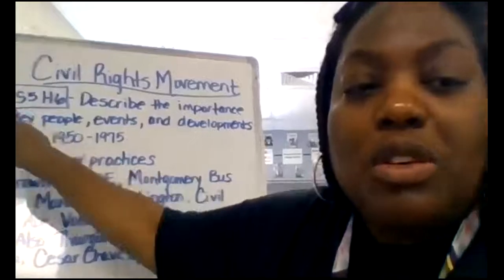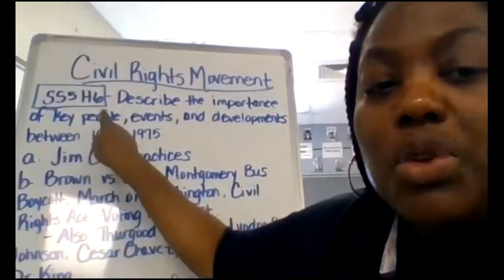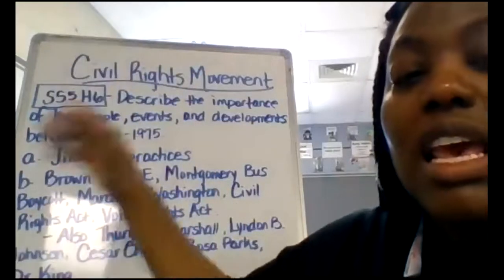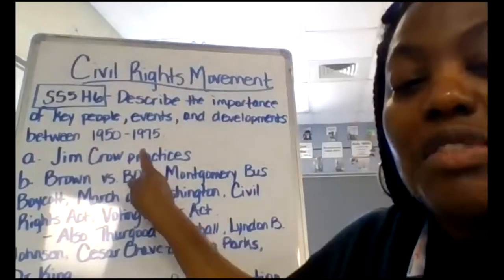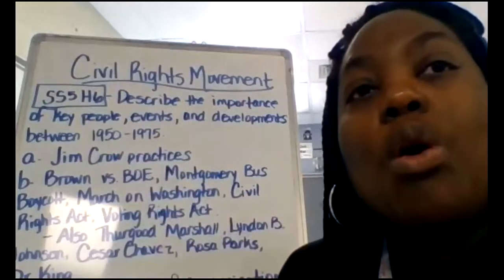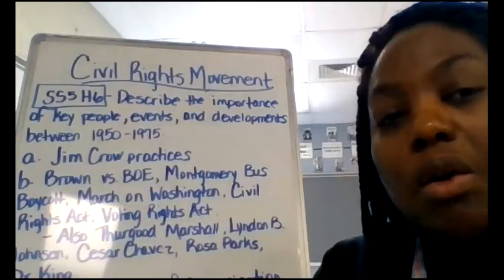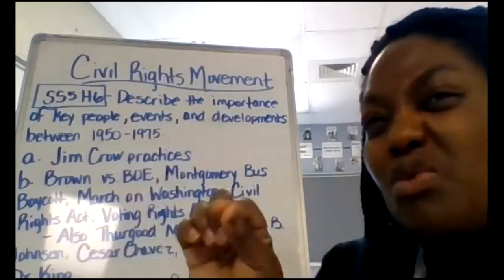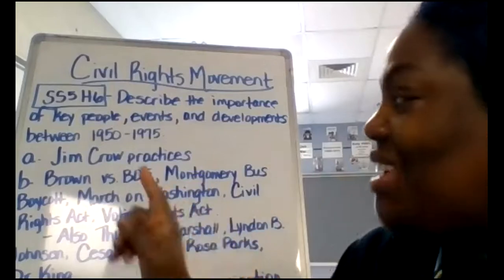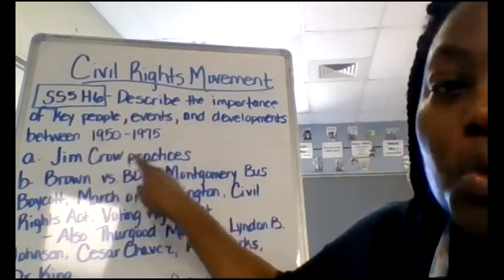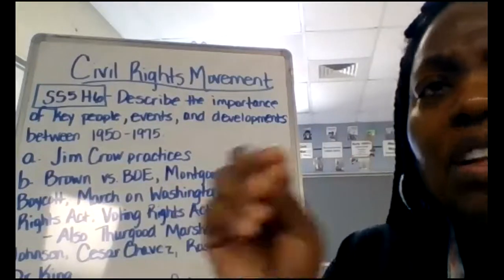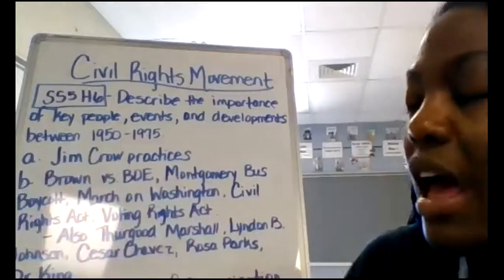So we know it's Social Studies, Fifth Grade, History Number Six. This is our sixth standard — we're going to describe the importance of key people, key events, and the developments from 1950 to 1975, which was the civil rights era. Also during this time, the Vietnam War happened, and we talked about that as well. Next week I want to touch a bit more on the Vietnam War, because this also happened during this time — in America, a lot of people protested it.